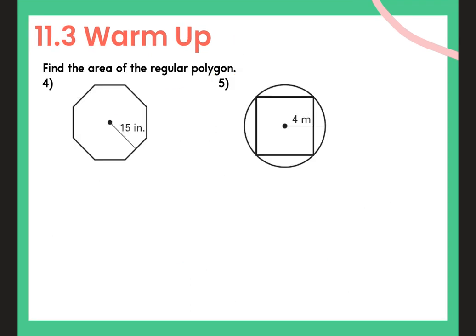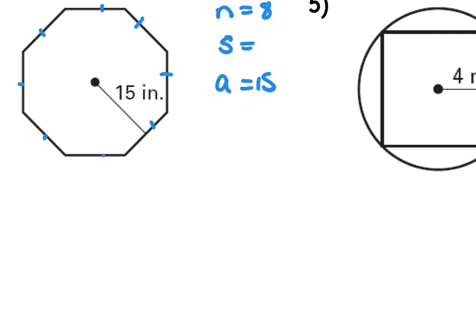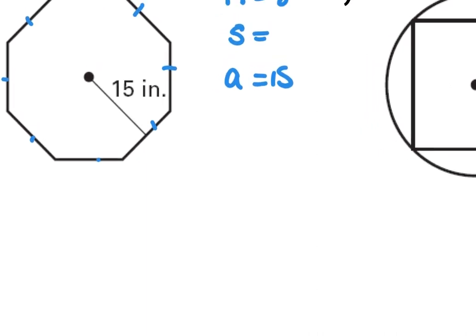Number 4 is an 8-sided polygon, so n equals 8. The length of each side is missing, but we have the apothem, which is 15. This is a case where we need to find the length of each side, and it's not a special right triangle.